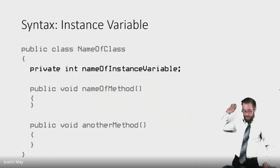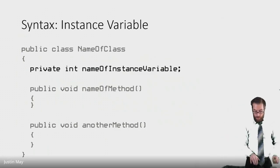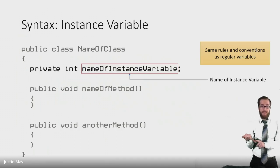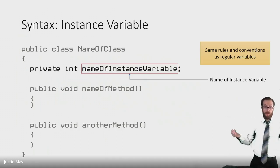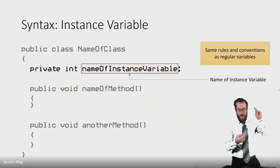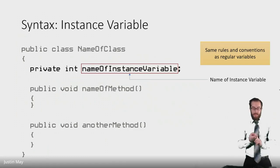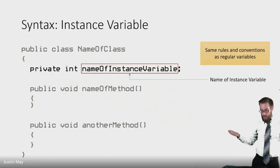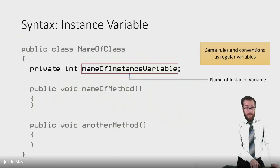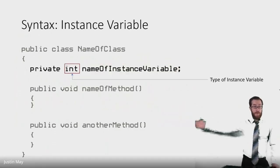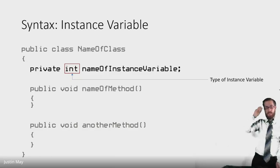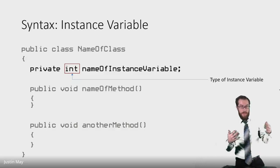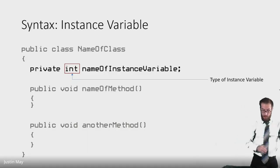You can also define your instance variables in the class. These define the attributes — what your object can know. Instance variables are simple: they're variables, you have to name them, and they use the same rules and conventions as any other variable. You use numbers, letters, underscore; you can't start with a number; and we use camel case where the first letter is lowercase. You also have to declare the type — int, double, boolean, or the name of any class you've created.